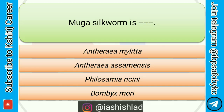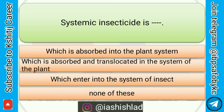Next question is: muga silkworm is. Options are: Antheraea mylitta, Antheraea assamensis, Philosamia ricini, Bombyx mori. Correct answer is Antheraea assamensis.